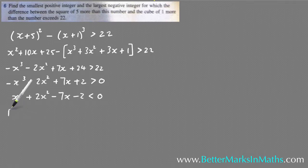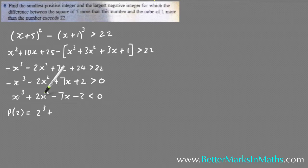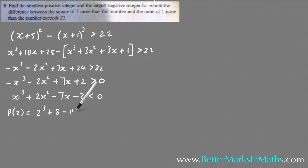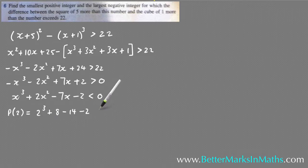You can use the factor theorem by trying p(2). When you do that you get 2³ + 2(2²) - 7(2) - 2, which is 8 + 8 - 14 - 2 = 0. So that means (x - 2) is a factor.